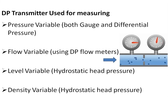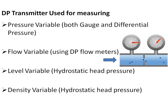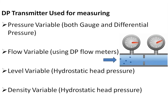This will cause a pressure drop. The pressure drop is measured by the DP transmitter and is directly proportional to the flow rate, given as Q proportional to the square root of delta P.